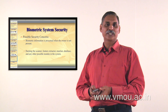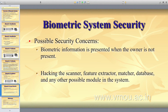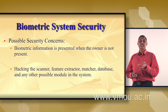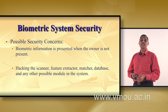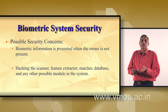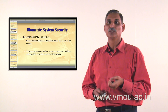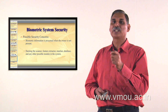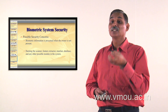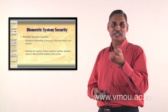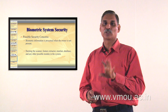In biometric system security, the possible concerns are: biometric information being presented when the owner is not present, and hacking the scanner, feature extractor, matcher, or database. If anyone has hacked the database or the scanner, they can fool the system because that information can be used for identification of the same person. Though biometrics increases system security, the security of the biometric system itself is very important and must be safeguarded as a whole.